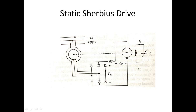In the static Scherbius drive, the recovered slip power is used to drive a DC motor. The voltage Vd2 is controlled by controlling the field voltage of the DC motor. By controlling the field voltage, Vd2 is controlled, and through the slip power recovery scheme, the slip of the induction motor is controlled. These are the two methods of slip power recovery. Thank you.